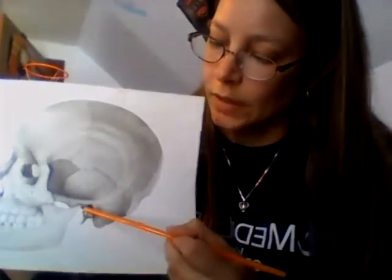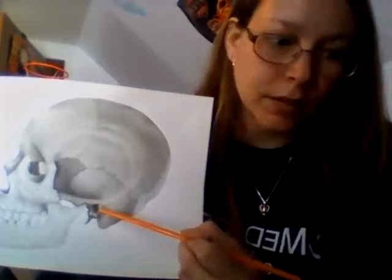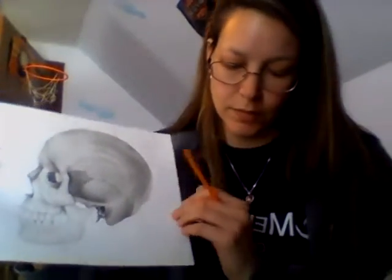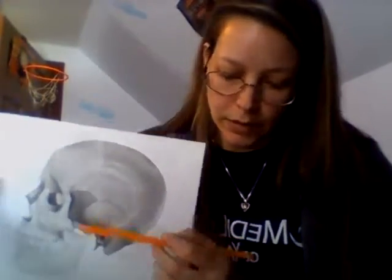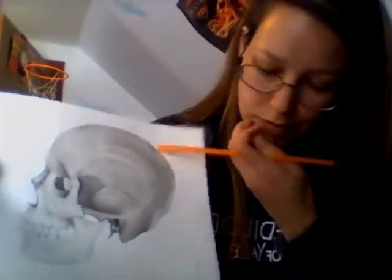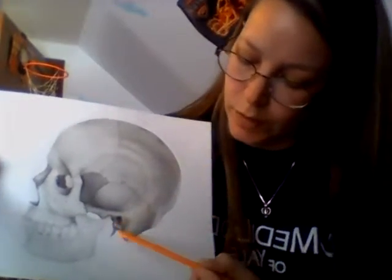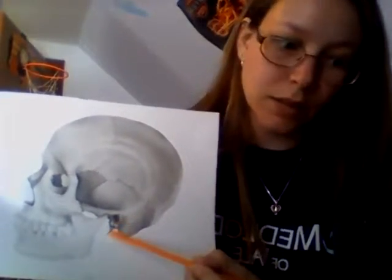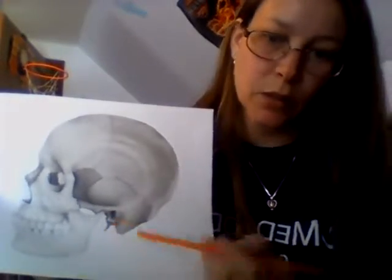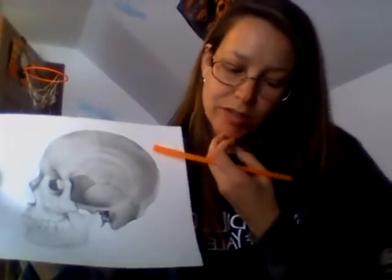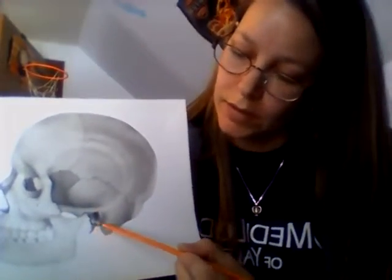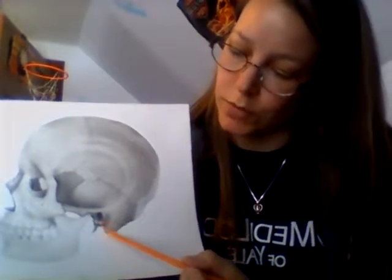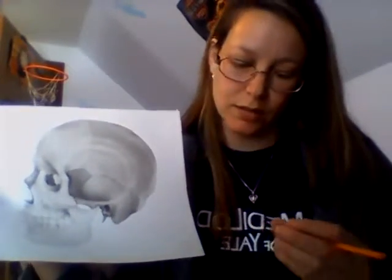This little black area here is the external acoustic meatus. Right here, this little thing that's coming down, is the styloid process. This area that comes down from the temporal lobe would be the mastoid process.